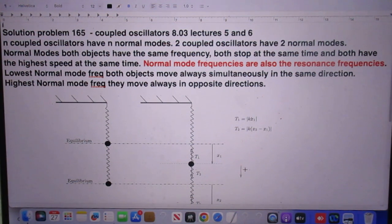In our case, in omega minus, the lowest normal frequency, the objects both always move in the same direction. If one moves up, the other moves up. If one moves down, the other moves down.